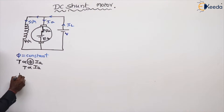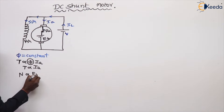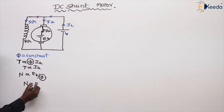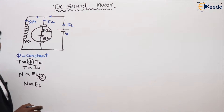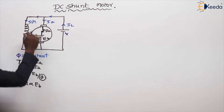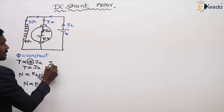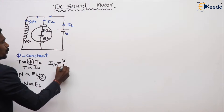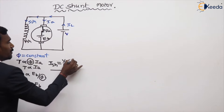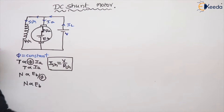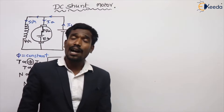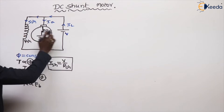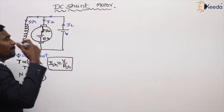The second relationship: speed is directly proportional to EB divided by φ, and where the flux is constant, speed is directly proportional to EB. Also, ISH equals V divided by RSH. This applies the same for the DC shunt motor, DC shunt generator, and long shunt compound motor — ISH equals V by RSH.